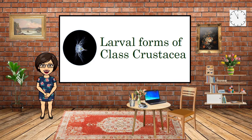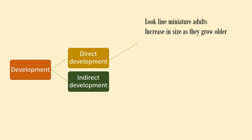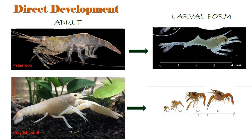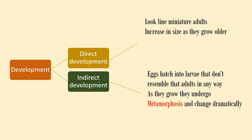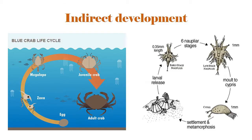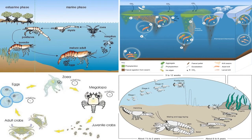Larval forms of crustaceans. Crustaceans show both direct and indirect development. In direct development, like in pelimon and crayfish, the adult is attained by progressive growth and differentiation of the embryo so that the newly hatched young resembles the parents in general structure. In indirect development, there is a larval stage which differs from the adult in many features and acquires adulthood through metamorphosis. Many crustaceans undergo indirect development involving a wide variety of larval forms.